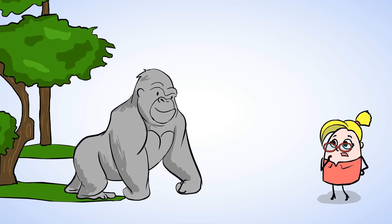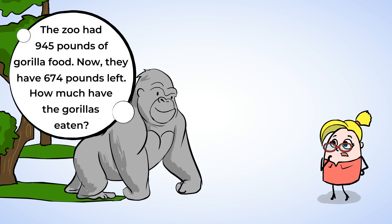Oh my gosh! These gorillas are huge! At the beginning of the week, the zoo had 945 pounds of gorilla food. Now they have 674 pounds of gorilla food left. How much have the gorillas eaten? Since some food was eaten, there's now less food. So we need to subtract to find out how much was eaten.